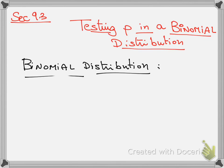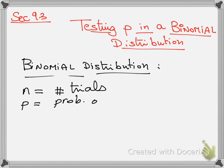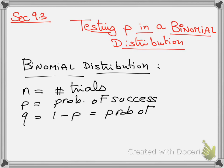Let me remind you: in a binomial distribution we have n, the number of trials; p, the probability of success; q, which is one minus p, the probability of failure; and r, the number of successes.